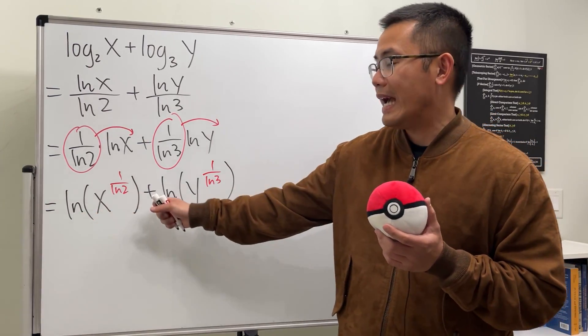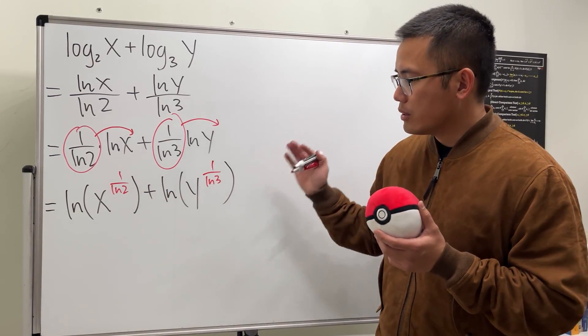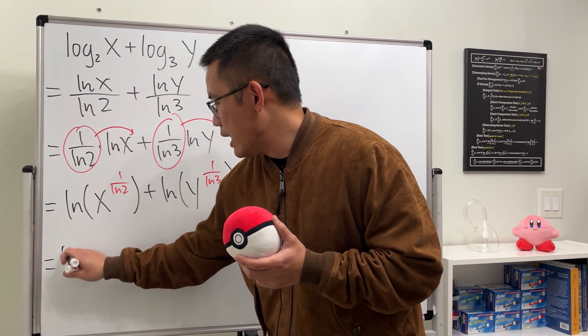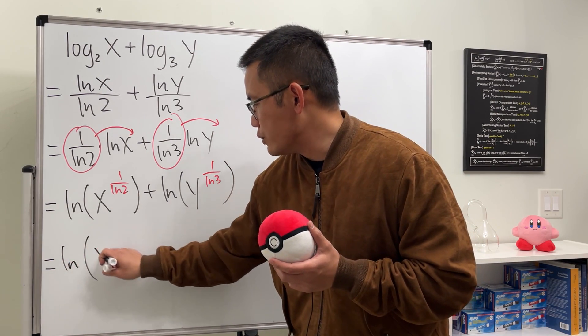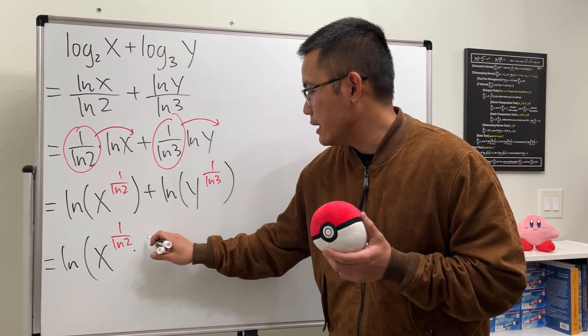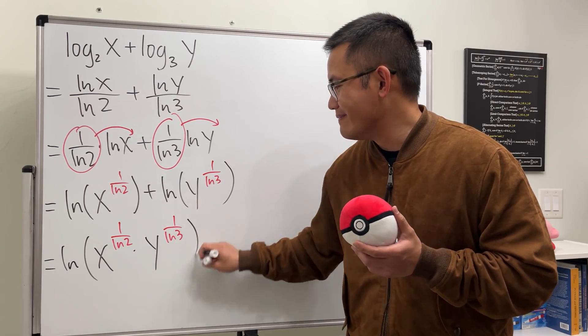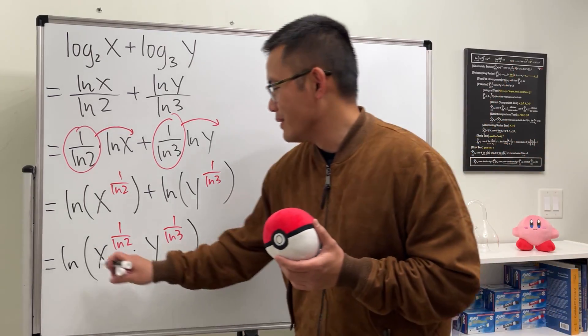Congratulations! Now we have ln and ln, and we are adding, so we can just put the insides together and multiply them. So this right here is equal to ln of the first one, which is x to the 1 over ln 2 power, and we multiply this by y raised to the 1 over ln 3 power.